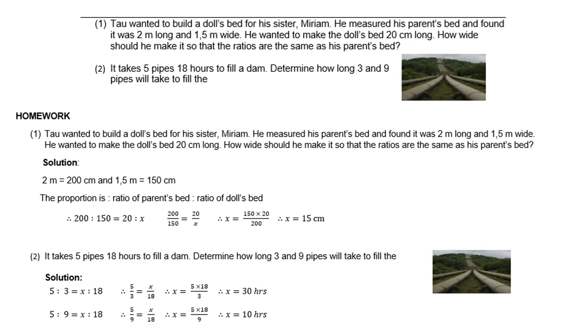Okay, let's first do number one. The solution: 2 meters is the same as 200 centimeters and 1.5 meters is the same as 150 centimeters. The proportion is ratio of parents' bed is to ratio of doll's bed. So there you are, 200 is to 150 is the same as 20 is to X because X is the unknown. Cross multiply, and therefore you get X equals 15 centimeters. So that is how wide the bed should be.